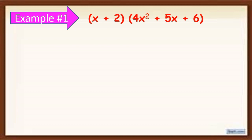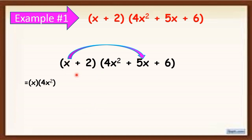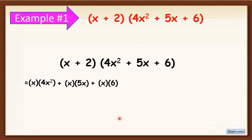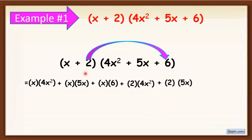To apply the distributive property, we are going to multiply each term of the binomial to each term of the trinomial. We are going to multiply first x times 4x squared, plus x times 5x, plus x times 6. Next, multiply 2 and 4x squared, plus 2 and 5x, plus 2 and 6.